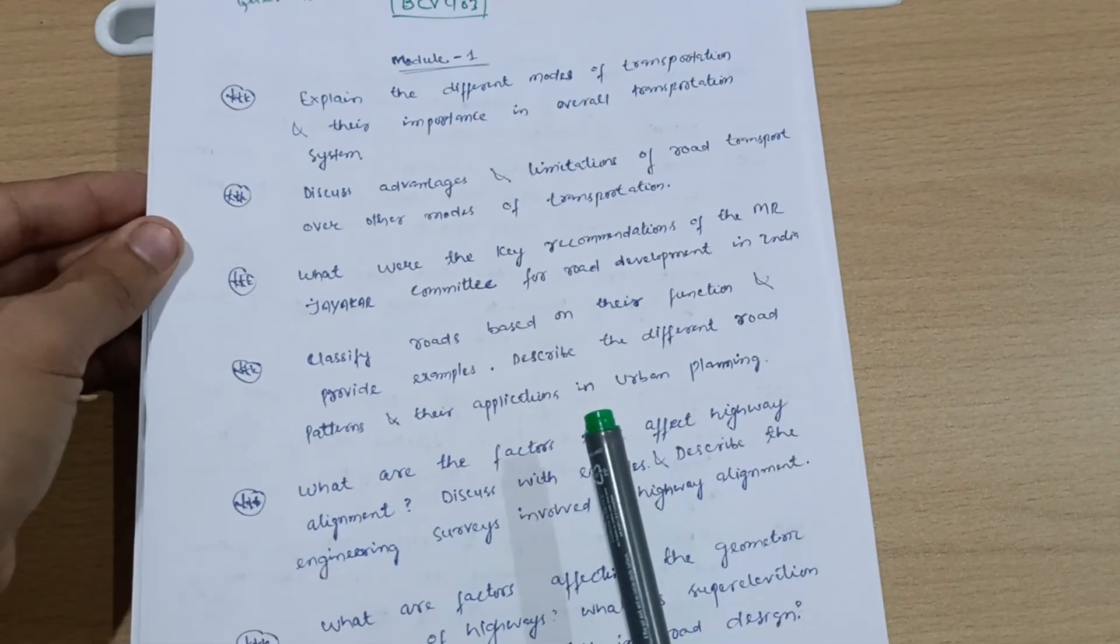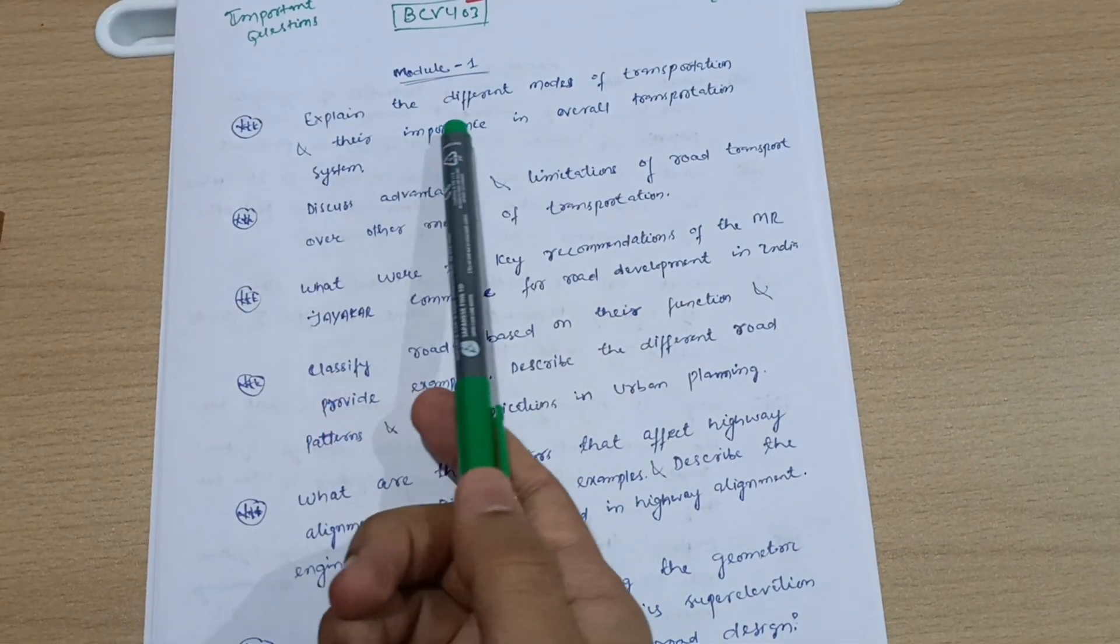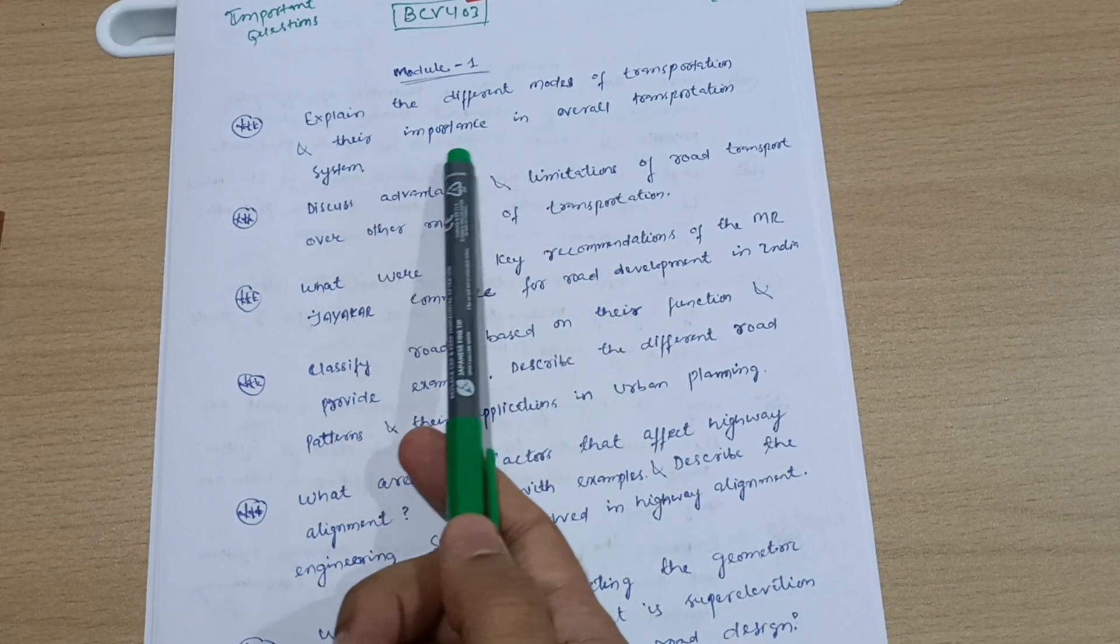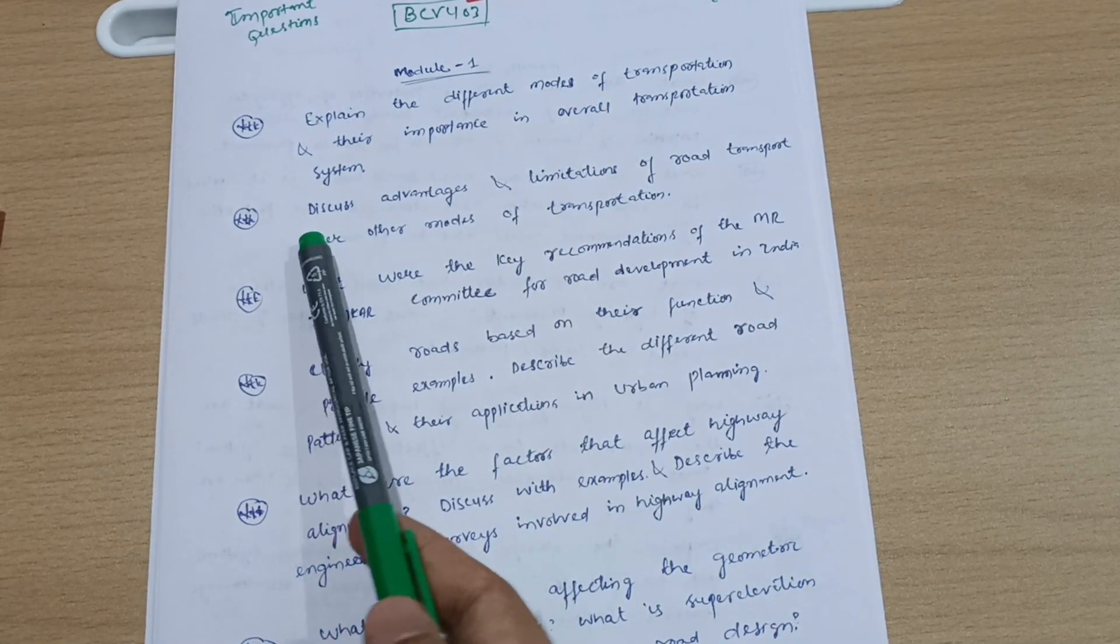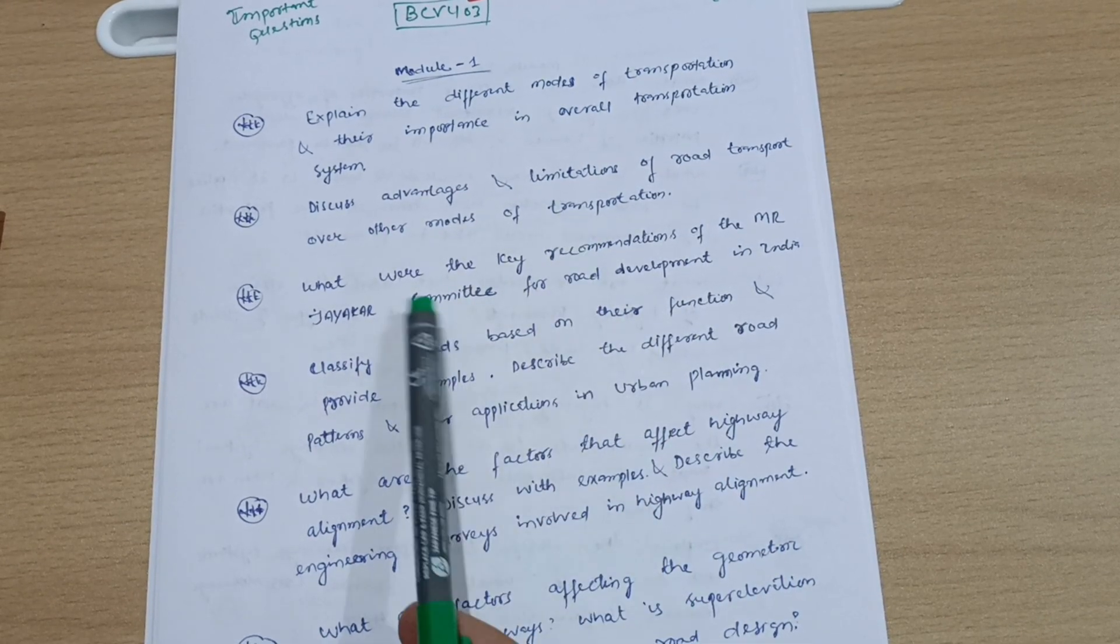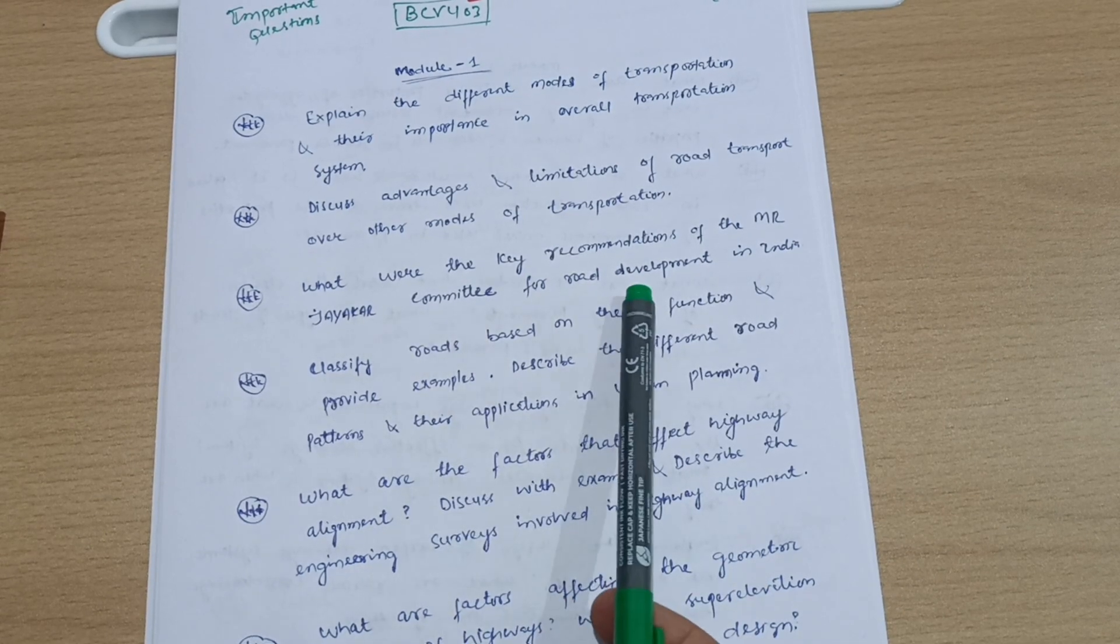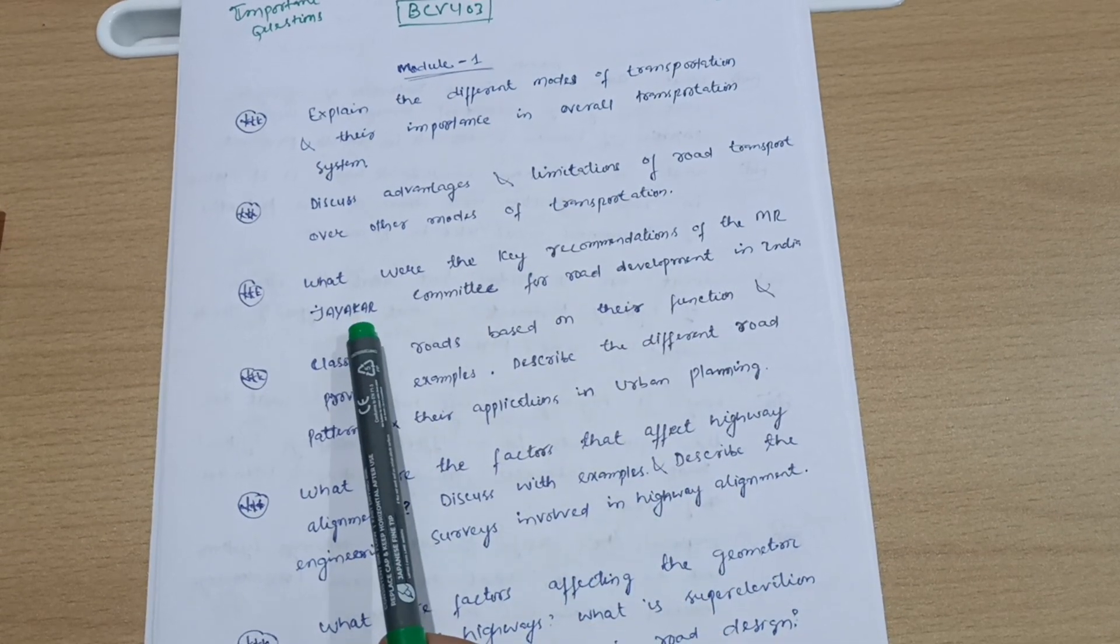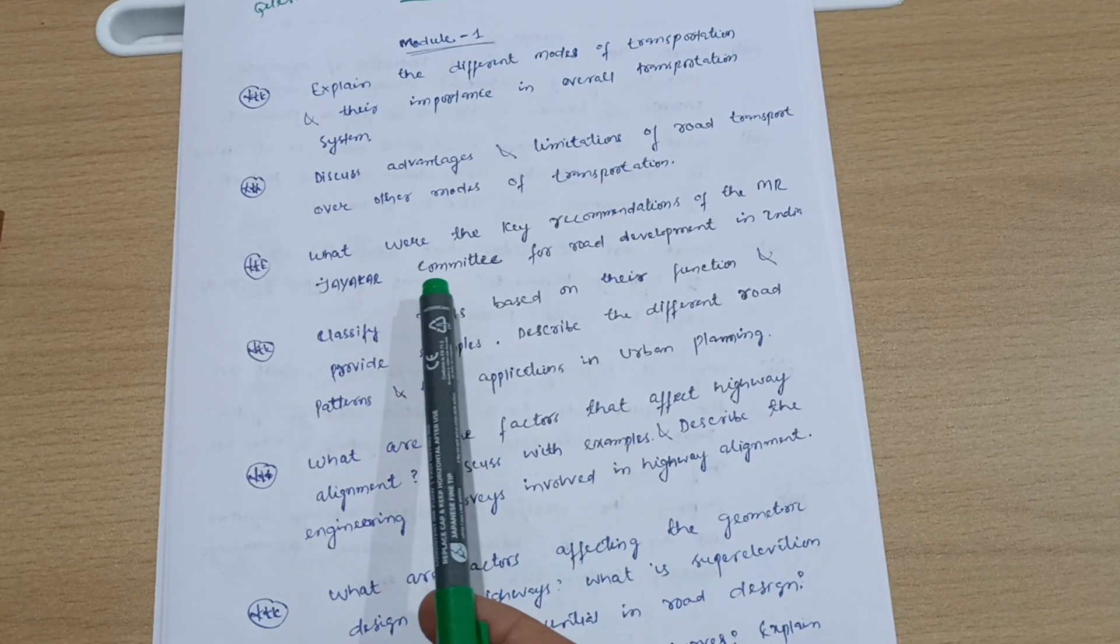I will discuss here theoretical questions. Explain the different modes of transportation and their importance in overall transportation system. Discuss advantages and limitations of road transport over other modes of transportation. What were the key recommendations of the MRJ car committee for road development in India? This is a super important question, frequently asked as far as 18 scheme and 21 scheme is concerned.